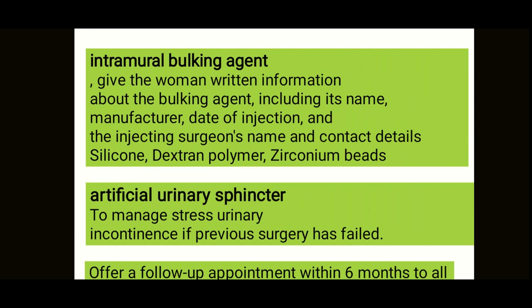The intramural bulking agent is another option. Women should be given written information about the bulking agent including its name, manufacturer, date of injection, surgeon's name, and contact details. Bulking agents used include silicon, dextran polymer, and zirconium beads. Similarly, for mesh procedures, the patient must be given full details: manufacturer, date of procedure, surgeon, and type of mesh used.